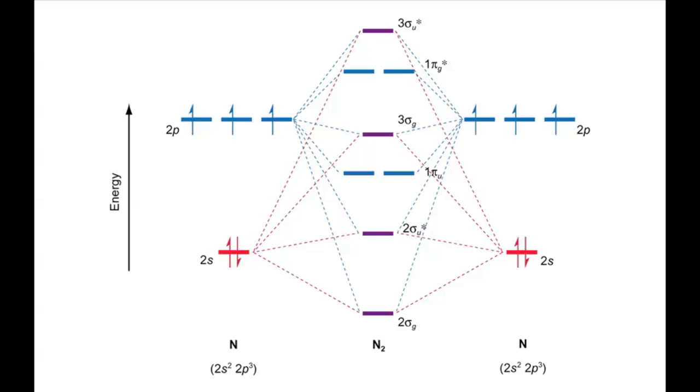Putting the electrons in gives the complete molecular orbital energy level diagram for N2, in which the three sigma-g orbital is the highest occupied molecular orbital.